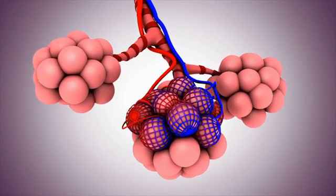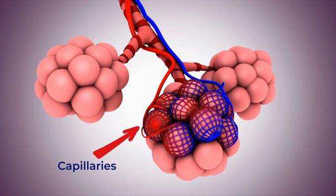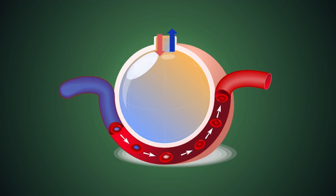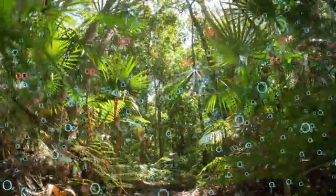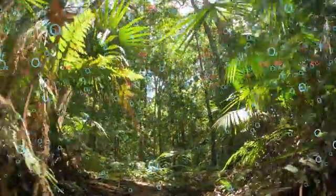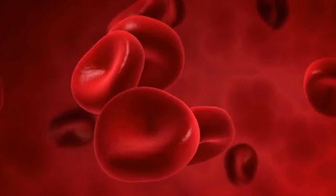Now, what you'll notice is that surrounding the alveoli are these capillary beds. These capillary beds get oxygen-poor blood from the pulmonary artery. As the deoxygenated blood passes by the alveoli, it picks up oxygen. But there's another important thing happening here — as it's picking up oxygen, it's also going to release carbon dioxide that accumulated in the blood as a product of cellular respiration. So now we have carbon dioxide going into the air inside the alveoli, and the blood is now full of oxygen.